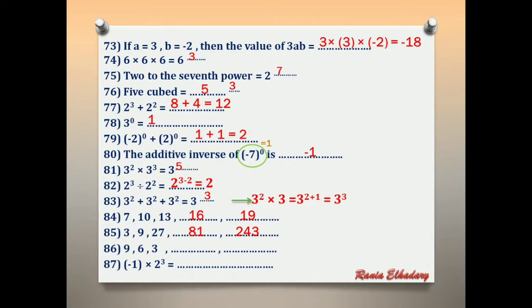Number 86: 9, 6, 3 — the numbers decrease by 3. 9−3=6, 6−3=3, 3−3=0, 0−3=negative 3.